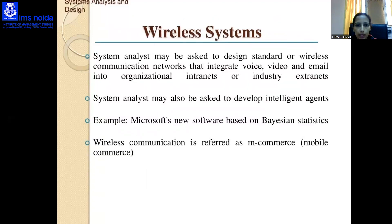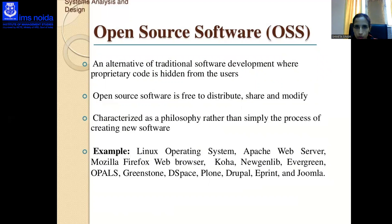Wireless systems use statistics and artificial intelligence; system analysts may be asked to develop intelligent agents. Wireless communication is referred to as m-commerce (mobile commerce). Open Source Software (OSS) is free to distribute, share, and modify, and is characterized as a philosophy rather than simply the process of creating new software. Examples of open source software include Linux, Apache web server, Mozilla, Joomla, and e-print.